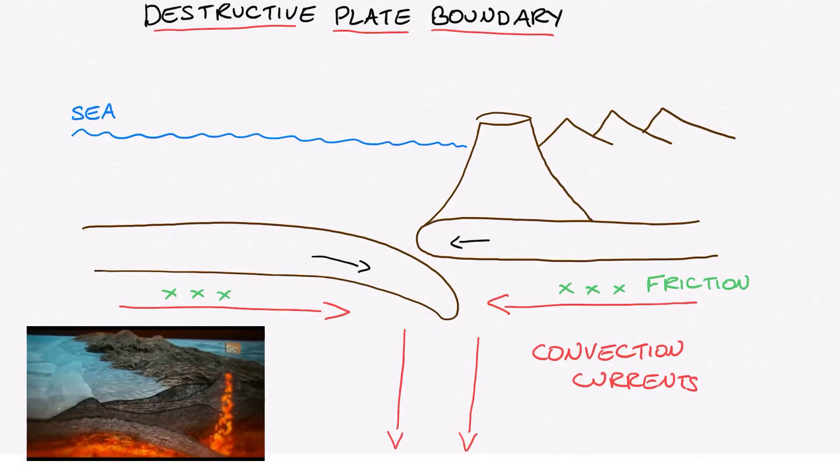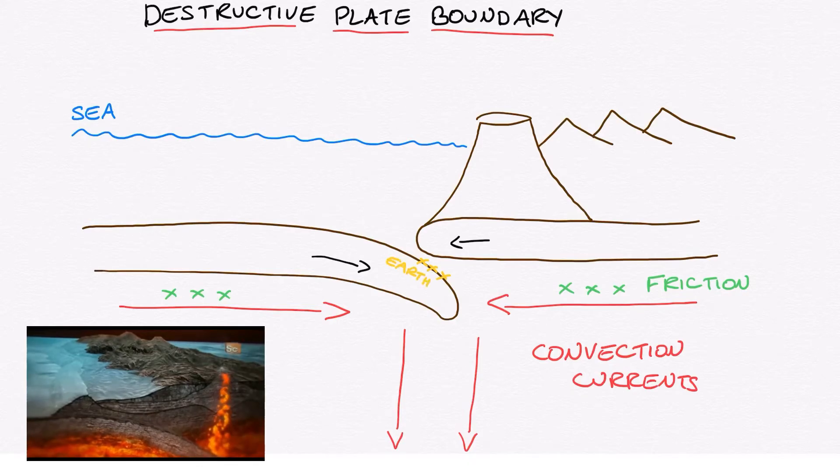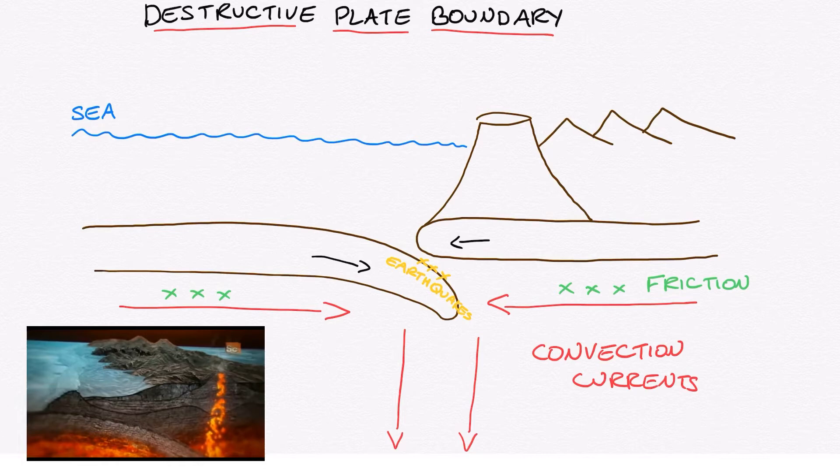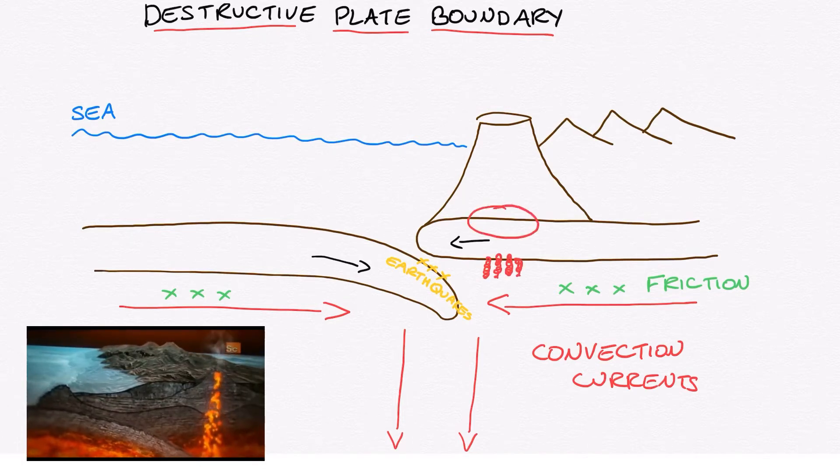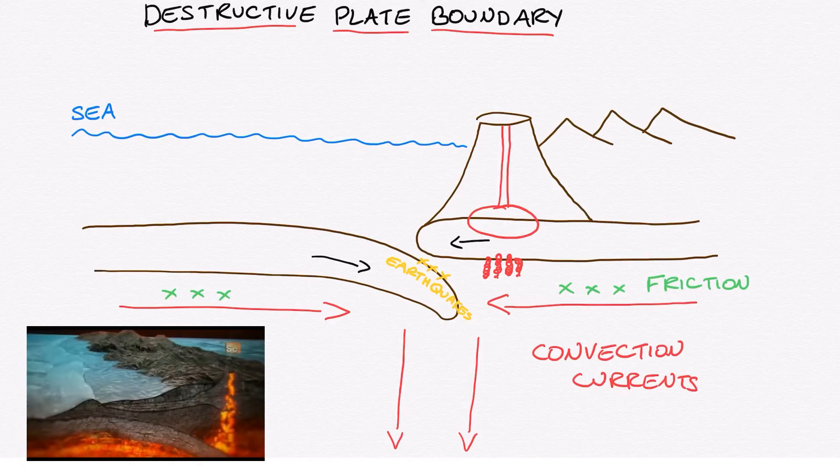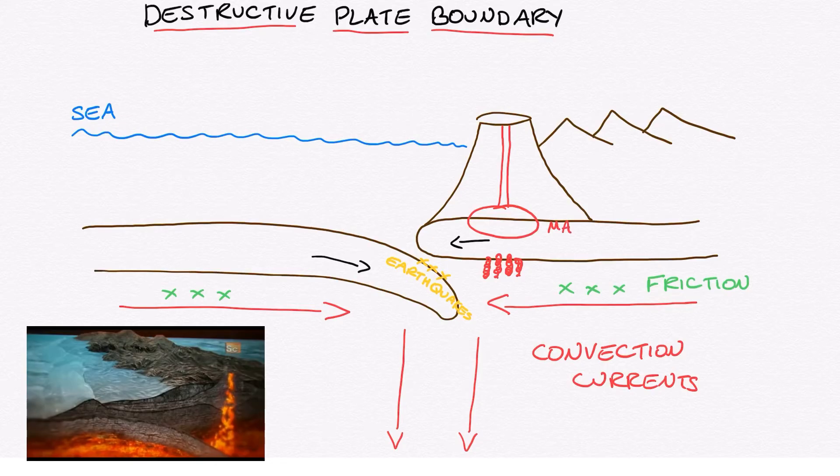The part that becomes subducted of the oceanic plate underneath the continental plate will also become superheated and will begin to melt. This will cause magma to rise up underneath the continental plate and to start to fill the magma chamber that's found there. This is why we get volcanoes on the continental plate.